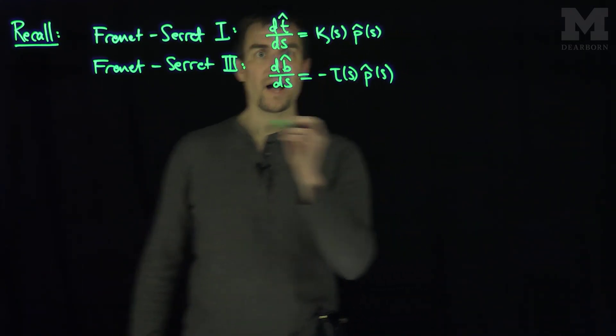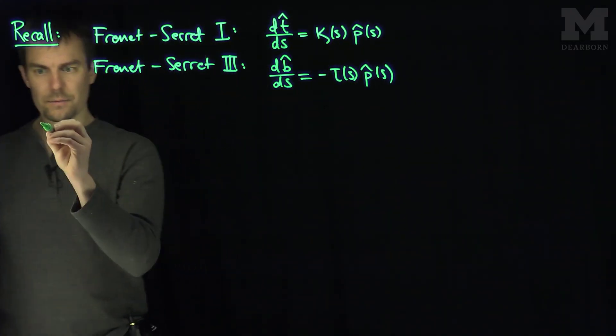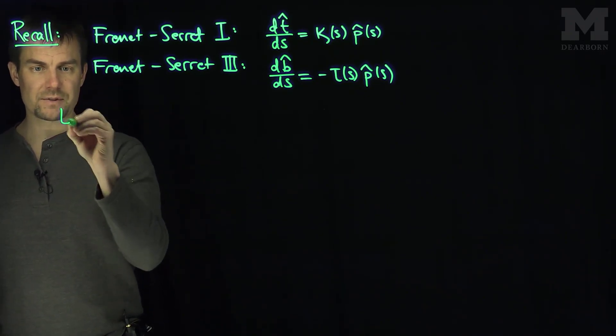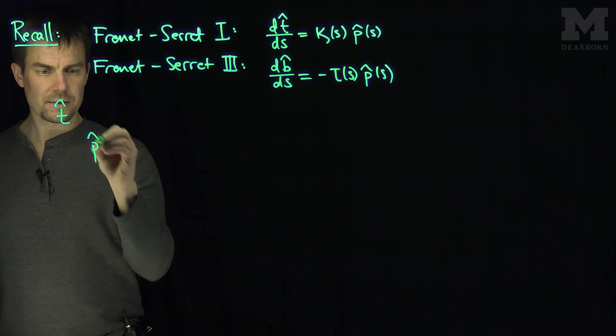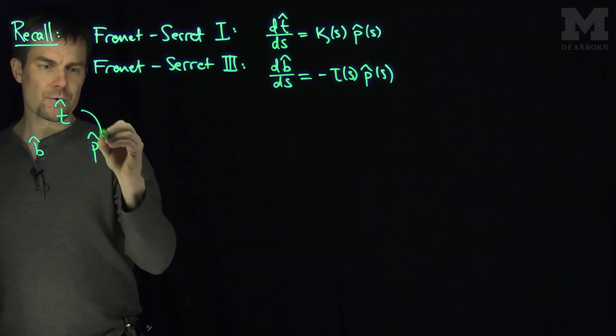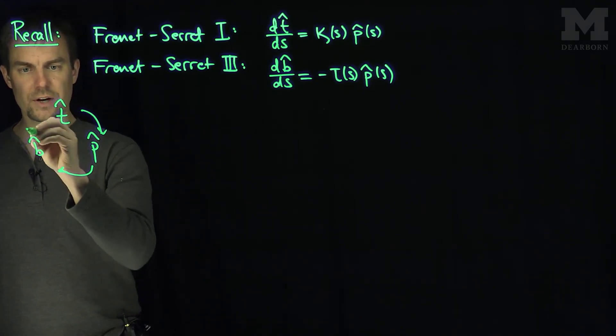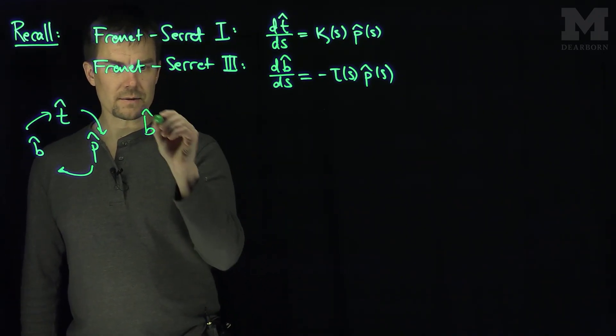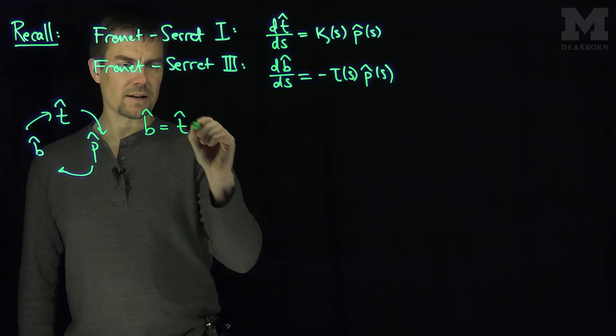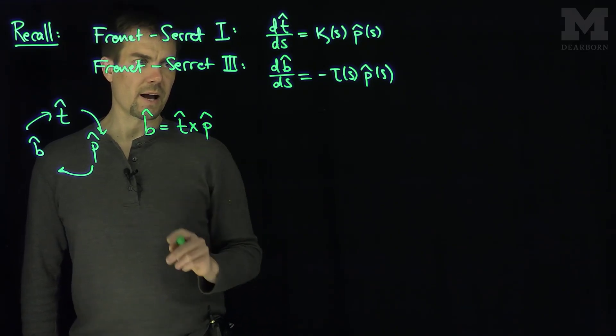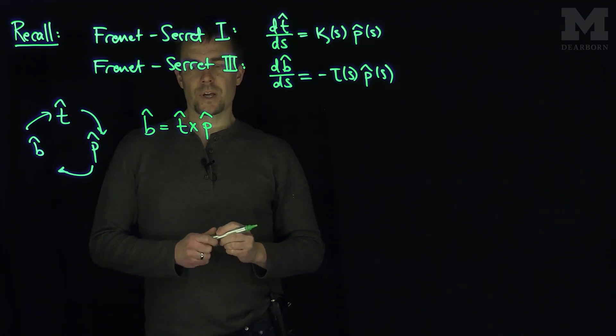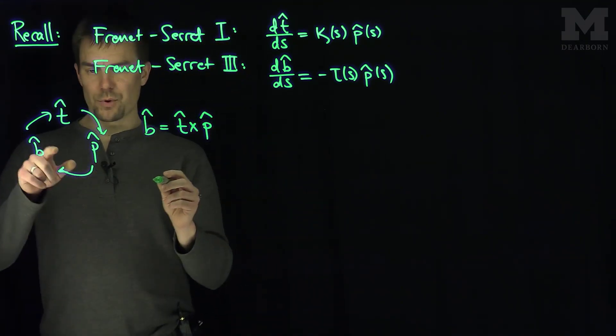So now, let's recall that we have the same rules for crossing t, p, and b that we do for i, j, and k. So we have t hat, p hat, and b hat, and when you cross them they go along the trajectory like this. And so now we recall that b hat is really t hat cross p hat. And so what we can do now is we can use this relationship.